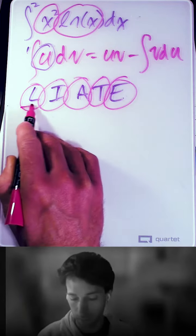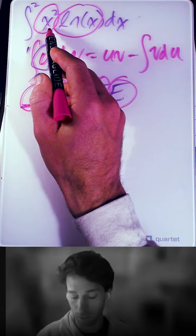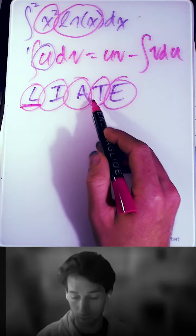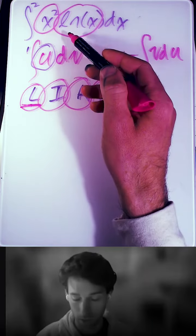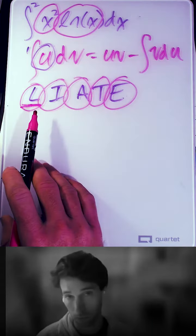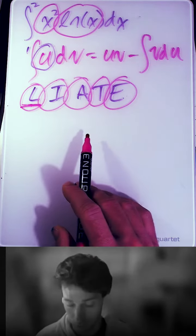So whichever one of these you see first as you're going down this acronym, one that you see first in the integral, is the one that you choose as your u, or you try as your u first when solving the problem.